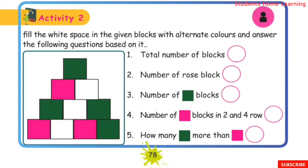Activity 2: Fill the white spaces in the given blocks with alternate colors and answer the following questions based on it. The white spaces in the blocks are colored based on the pattern, and then the questions are answered.